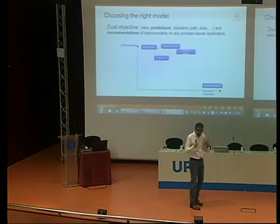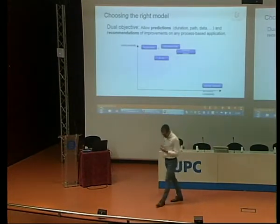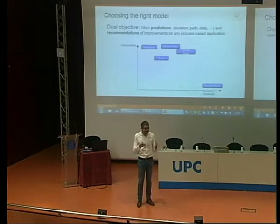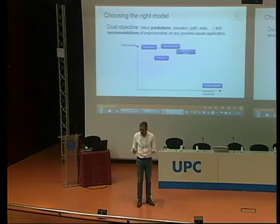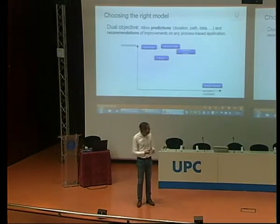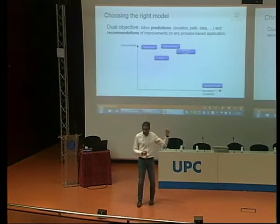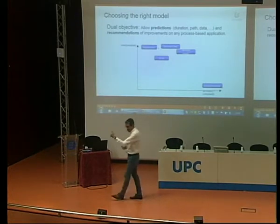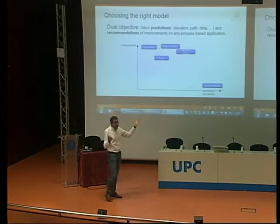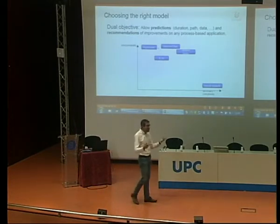So that was what we tried to do. Our objective is to work on a predictive model that is generic enough so it applies to the majority of process-based applications. And then we need to choose one algorithm or several algorithms. We wanted to predict and recommend. Here's a simplistic view of what algorithms are out there when you need to pick one.